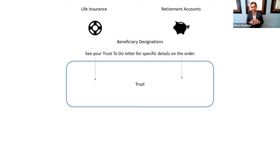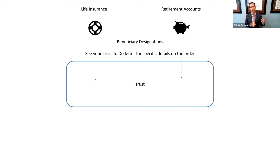When you update your life insurance policy, you would go to your employer, or if you own a life insurance policy that you purchased outside of employment, you would request a change of beneficiary.